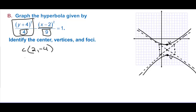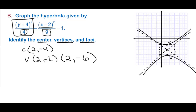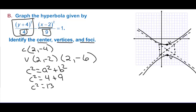The vertices are (2, negative 2) and (2, negative 6). For the focal points: c squared equals a squared plus b squared, so c squared equals 4 plus 9 equals 13. Therefore c equals plus or minus the square root of 13, which is approximately 3.6.